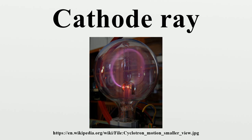Cathode rays are so named because they are emitted by the negative electrode, or cathode, in a vacuum tube. To release electrons into the tube, they first must be detached from the atoms of the cathode. In the early cold cathode vacuum tubes, called Crookes tubes, this was done by using a high electrical potential between the anode and the cathode to ionize the residual gas in the tube. The ions were accelerated by the electric field and released electrons when they collided with the cathode.